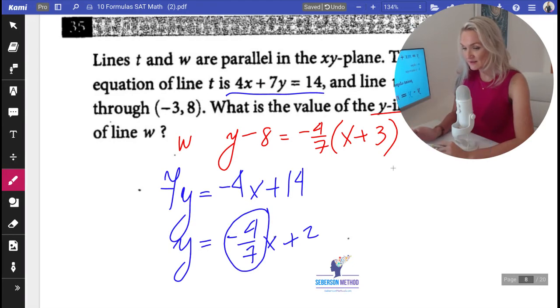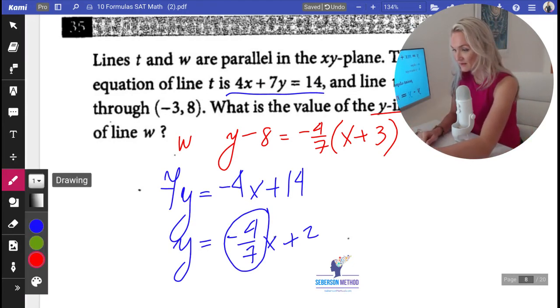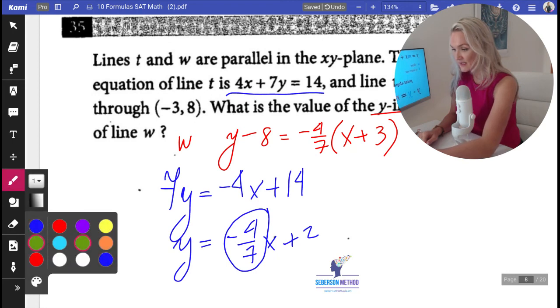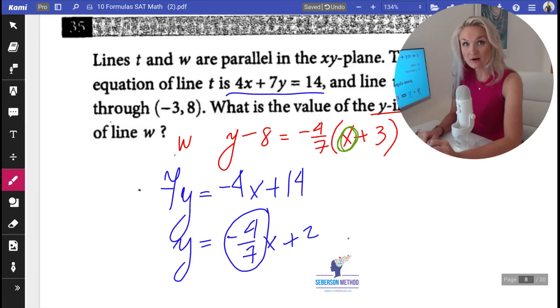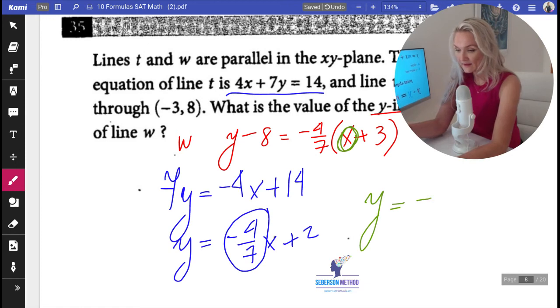So you can either use your calculator. I'm going to replace X with 0. I'm just going to change color. Let's see. Disgusting green. So now X equal to 0 will help us find the value of Y. Y is equal to negative 4 sevenths times 3, because 0 plus 3 is usually 3, plus 8.